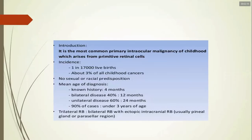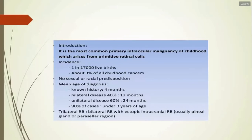It is the most common primary intraocular malignancy of childhood, arising from primitive retinal cells. Incidence is 1 in 17,000 live births (some books say 1 in 15,000), comprising about 3% of all childhood cancers. There is no sexual or racial predisposition. Mean age of diagnosis is four months for bilateral disease (40%) and 24 months for unilateral disease (60%). 90% of cases are under three years of age.